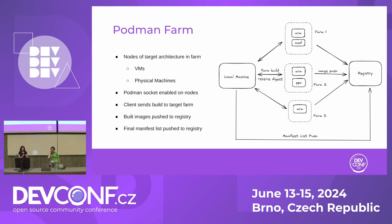When you're running Podman Farm Build, you specify the container file you want to build and the name of the image. It takes all the build data and information needed, sends it over to the nodes in the farm. The nodes in the farm build the image using Podman Build — exactly the same as on your local machine. It still uses Buildah under the hood, builds these images, and then pushes them directly to a registry. Once pushed, we get the digest back and create a manifest list, which is also pushed to the registry. All of this is automated from one command.